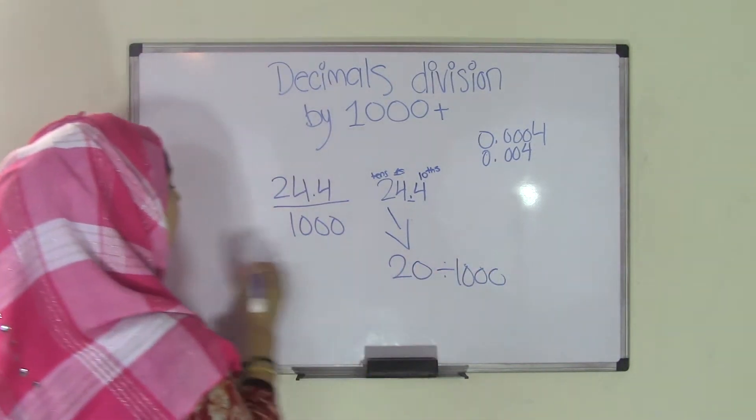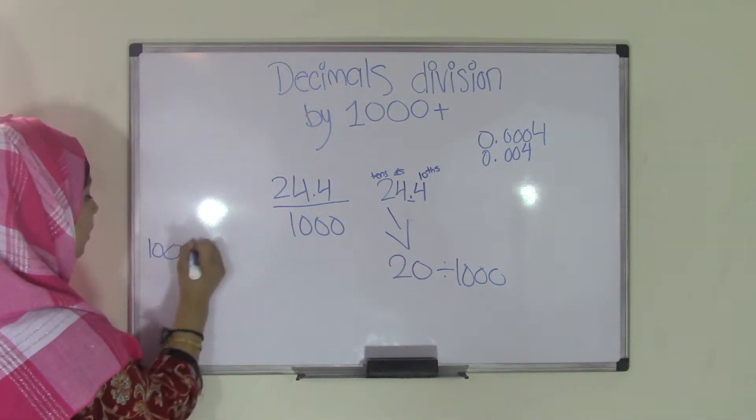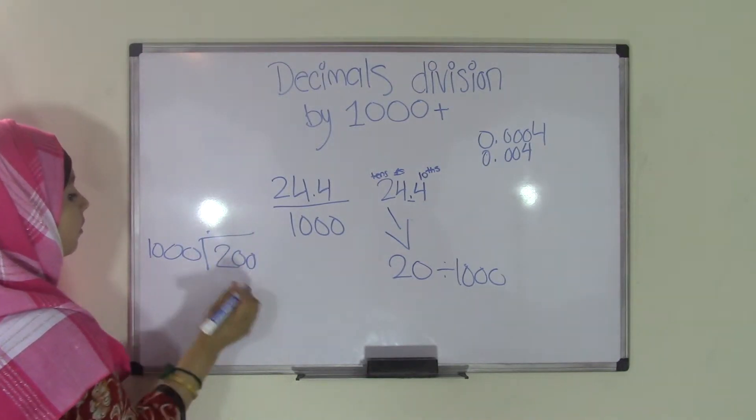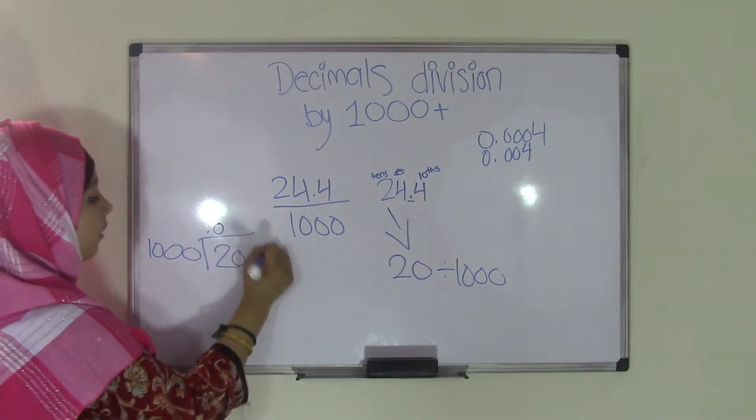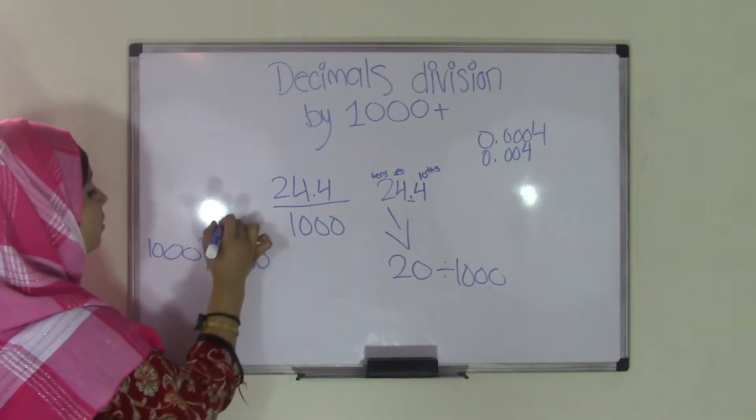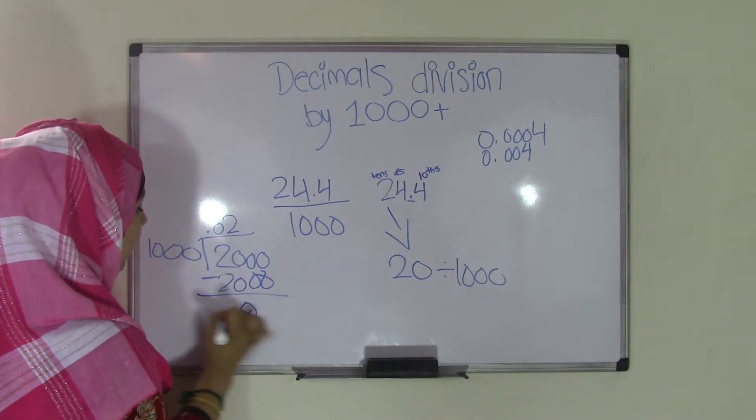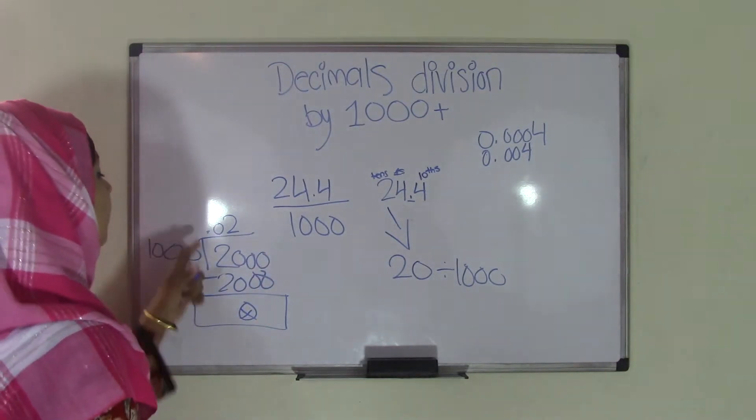So if you write that, and you come over here, you write 1,000 over here, 20. Add the decimal point, add a 0. You still can't divide 200 by 1,000. Add a 0 here, add another 0 here. 1,000 goes into 2,000 two times. So that means the quotient will become 0.02.